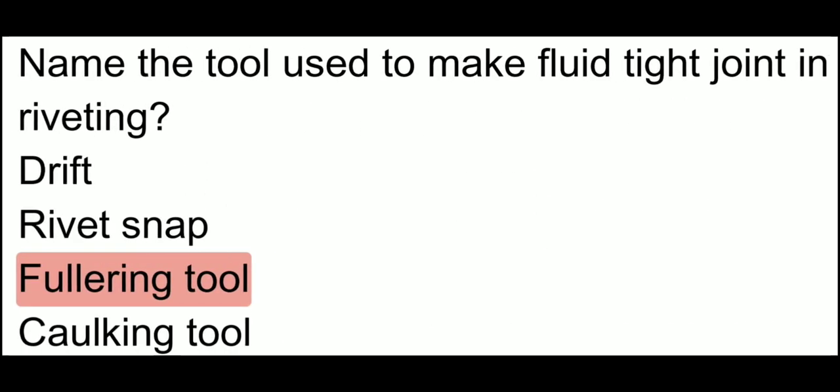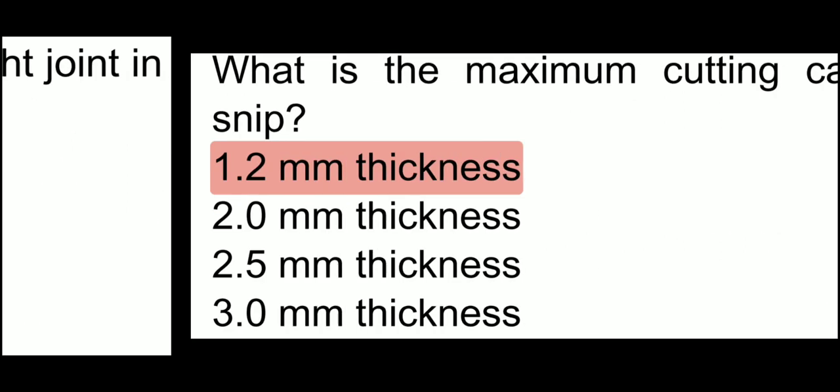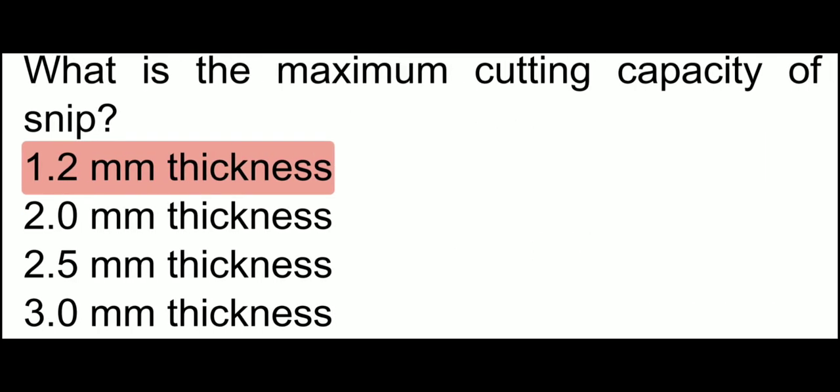Name the tool used to make a fluid tight joint in riveting — as we saw earlier, it is the fullering tool. What is the maximum cutting capacity of a snip? Which snip is used for circular cutting? The maximum cutting capacity of a snip is 1.2 mm thickness.